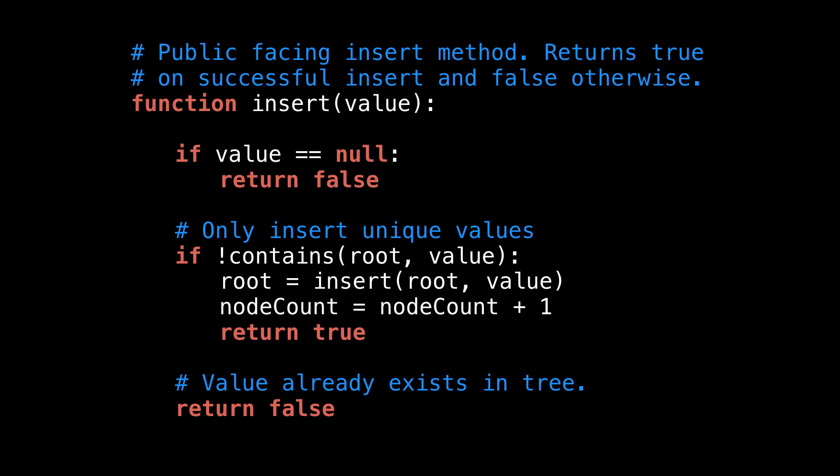Next, I want to show you some pseudocode for inserting nodes into an AVL tree because it's not all that obvious or easy. This first method is the public facing method for the insert method, which returns true or false depending on whether the value was successfully inserted or not. For simplicity, we're going to ban duplicate values in our AVL tree. So if the value already exists, or the value is null, this method would return false.